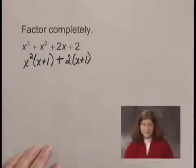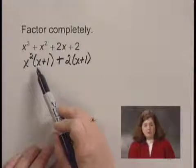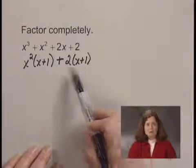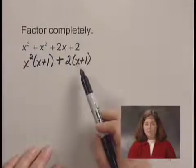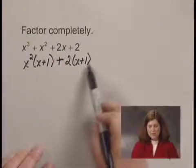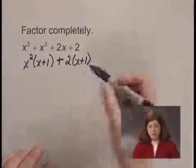Now if you get to this point and you see that you have a common binomial factor, x plus 1 here and x plus 1 here, we know that the factoring by grouping will be successful. So we factor out of this part and this part, that binomial factor, x plus 1.